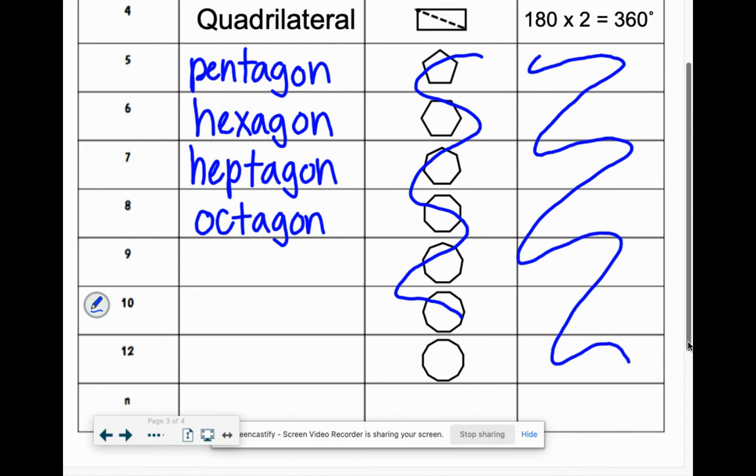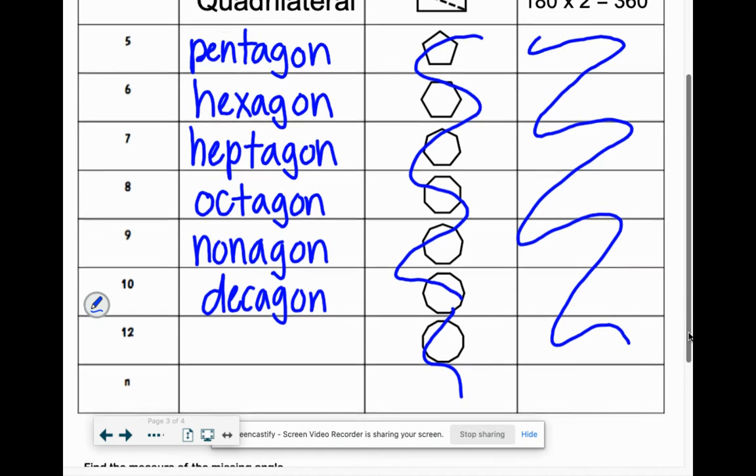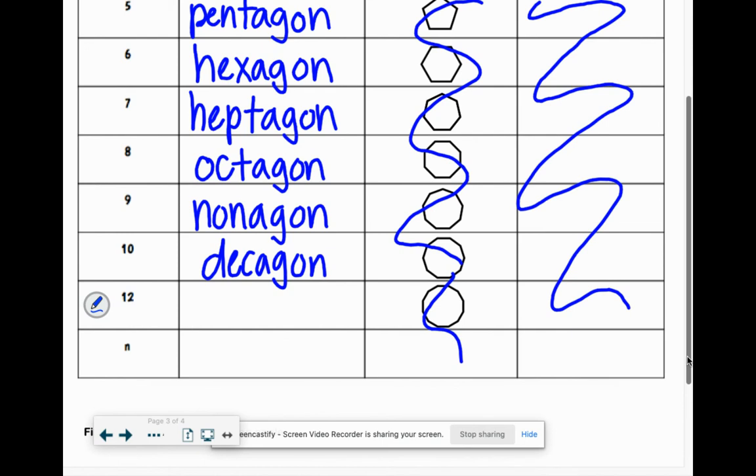Nine's another weird one, anyone? Nonagon, nonagon, nonagon. Not ten, anyone? This one's decagon. If you think about how many years in a decade, ten, so deca, ten. Twelve, it's another weird one, you don't use it too often. Twelve-agon? That'd be nice if it was twelve-agon. This one is dodecagon.